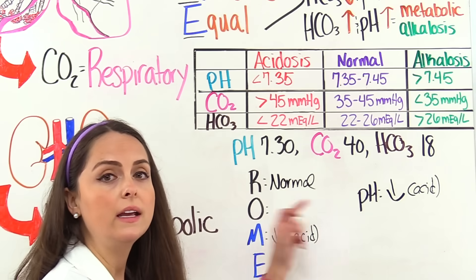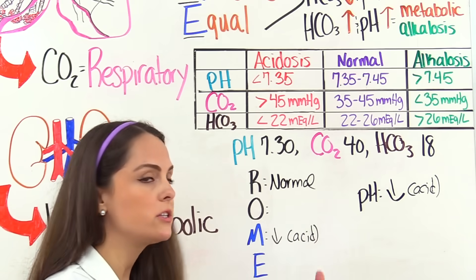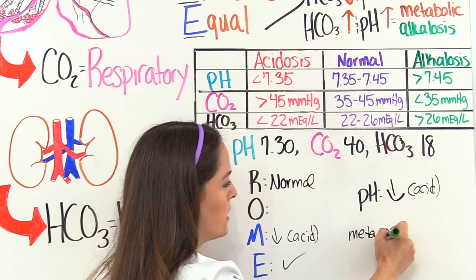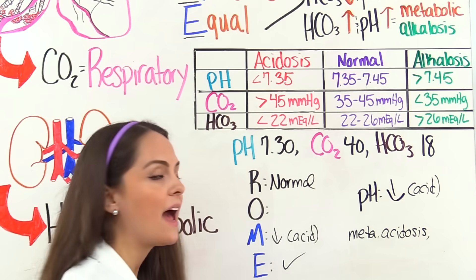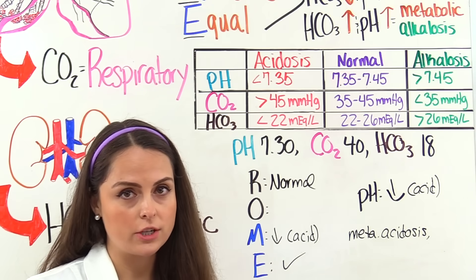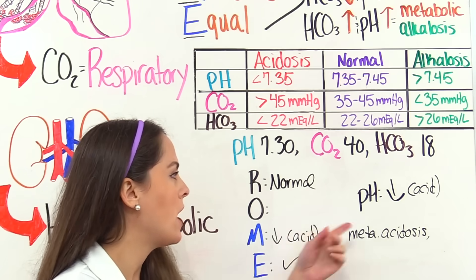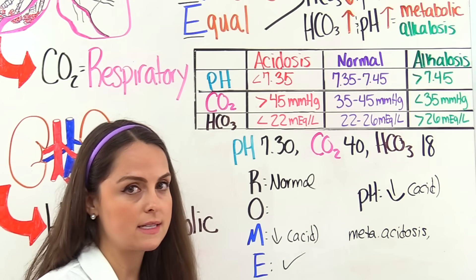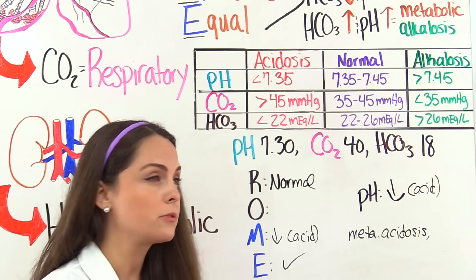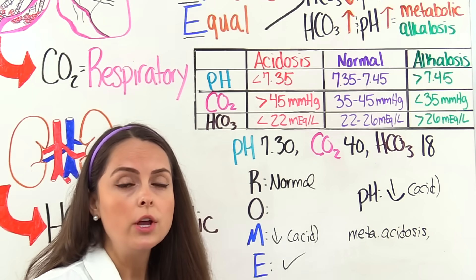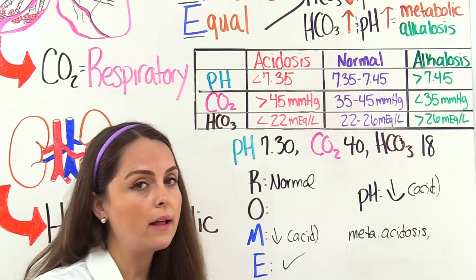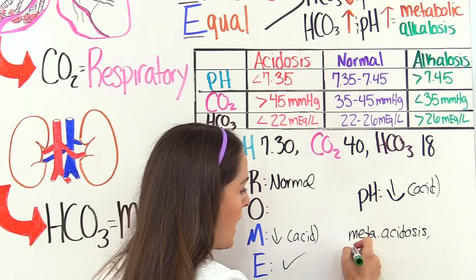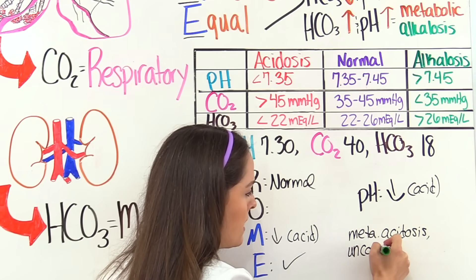Using ROME, we see we have an equal situation: metabolic is low, pH is low — so we have metabolic acidosis. That answers our first two questions. Now the third question: do we have compensation? Is blood pH normal? No. So we're not fully compensated. Is our respiratory system abnormal, trying to help balance out? No, it's normal — it's not trying to make itself abnormal to help balance the acidotic blood pH. So we don't have any compensation going on. Metabolic acidosis, uncompensated.